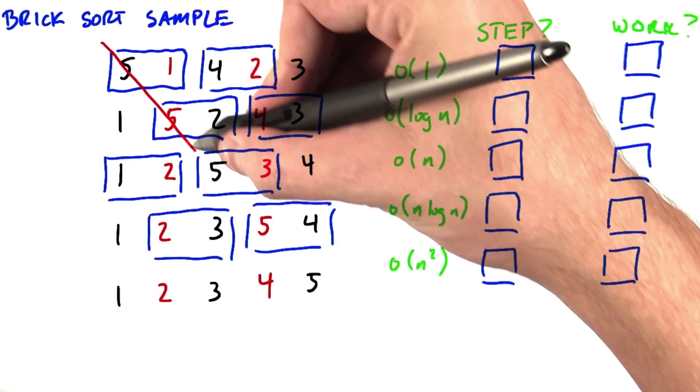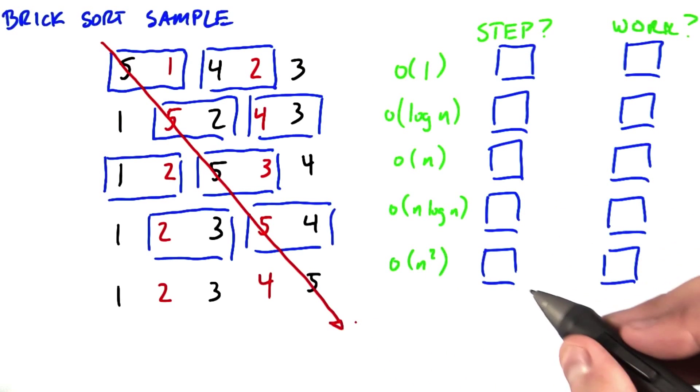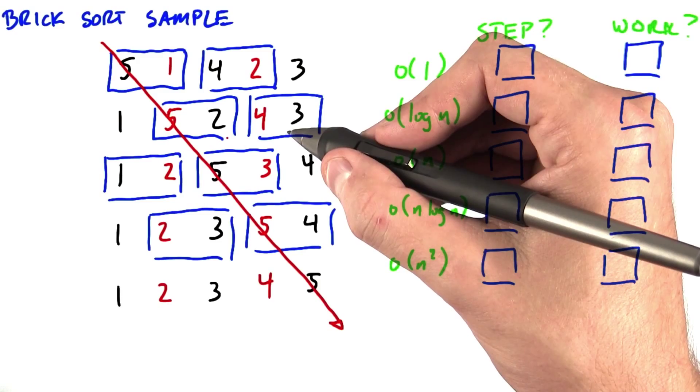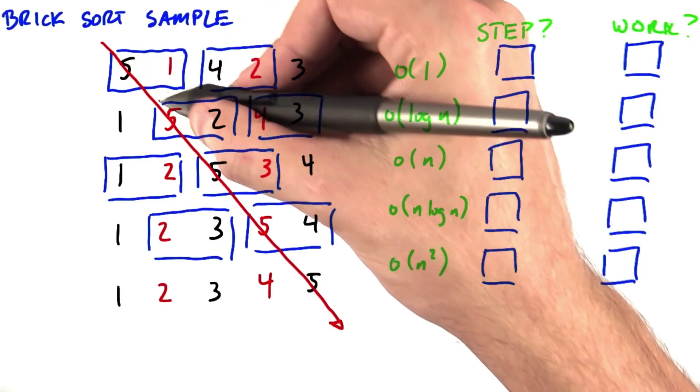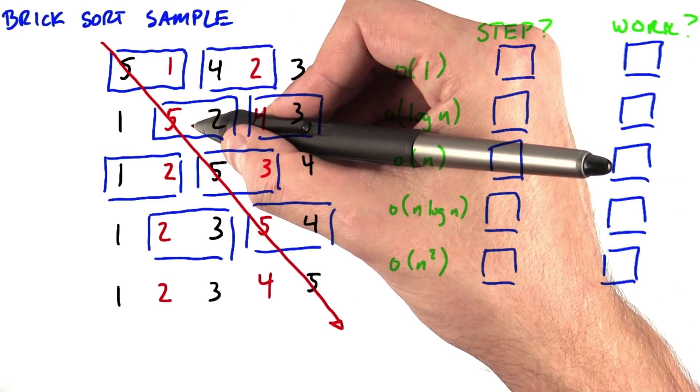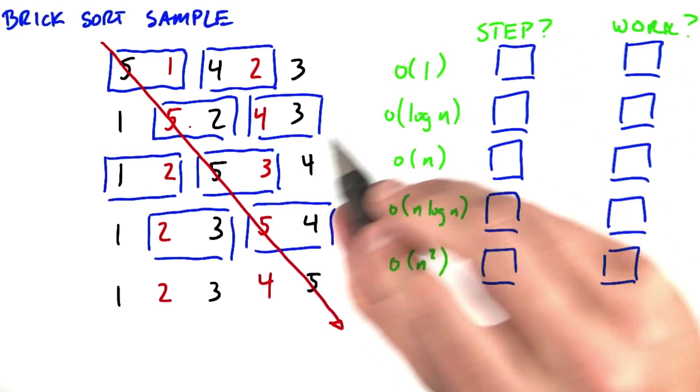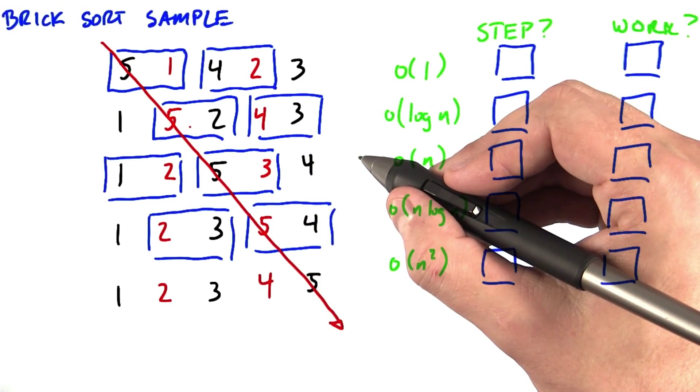So the example here is the number 5, which starts at the far left and then has to travel all the way to the right. So how quickly does one item move? Its maximum speed is moving one position per step, since the best it can do is swap with its neighbor and move only one position away.